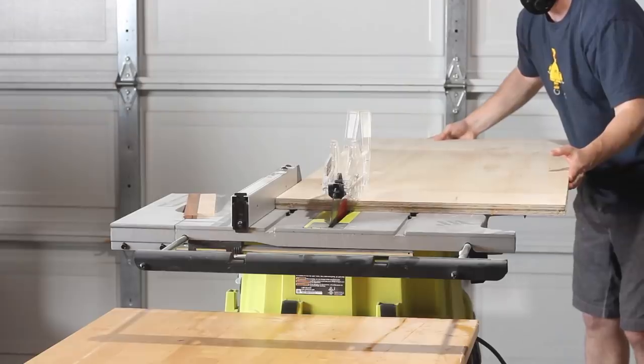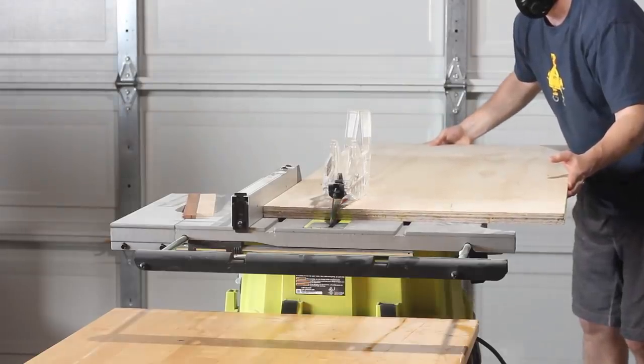Once the plywood was dry, I ripped each sheet into equal sections just under 6 inches. And this made the material more manageable on my small table saw.